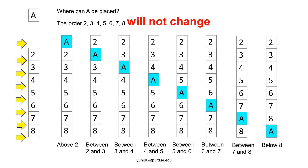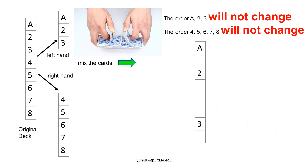Next we consider a more complex case. The left hand has three cards and the right hand has five cards. The cards interleave, but the order of the cards on the left hand will not change. The three cards on the left hand have A above 2 and 2 above 3. After shuffling, A must be above 2 and 2 must be above 3. Cards from the right hand may be inserted between A and 2, or between 2 and 3, but A must always be above 2.